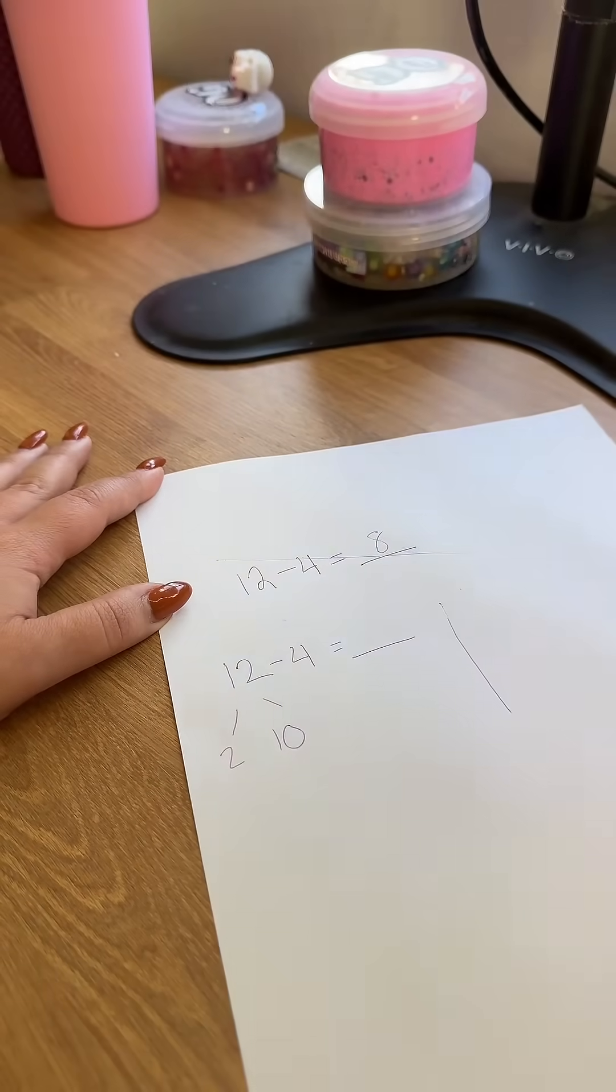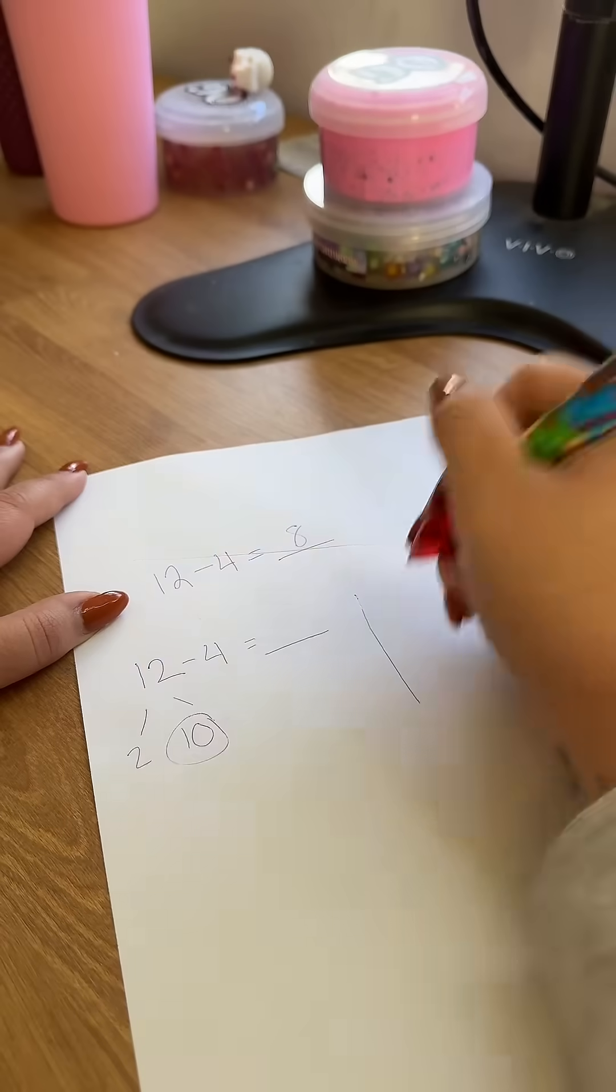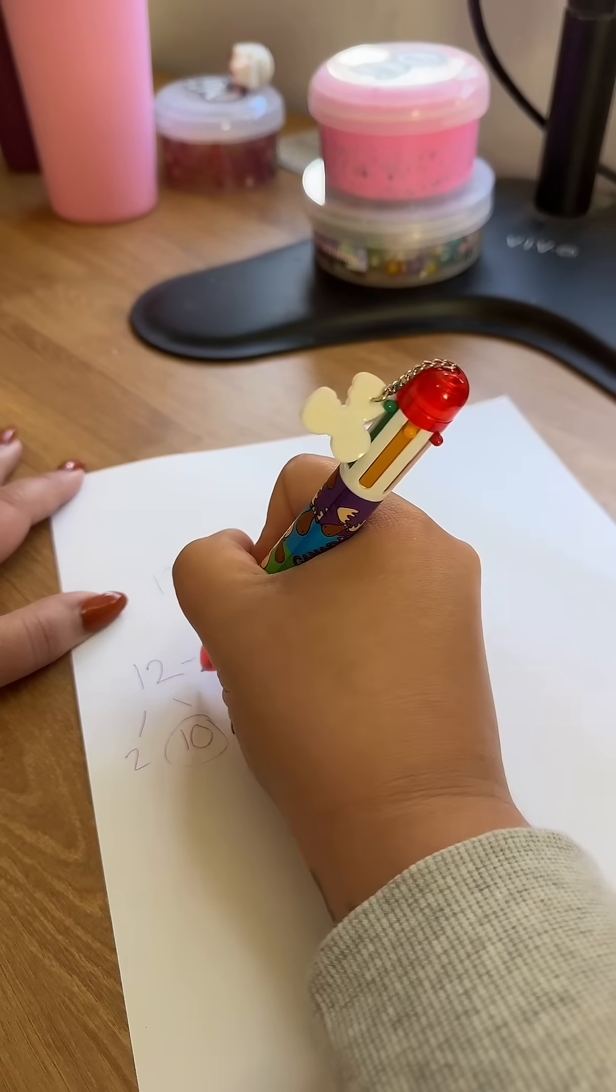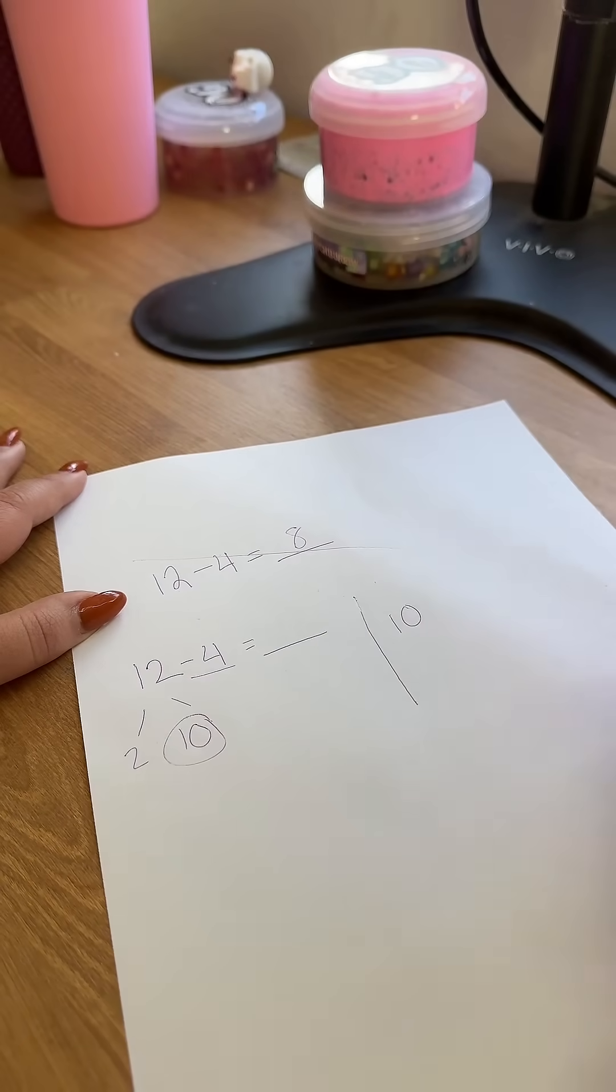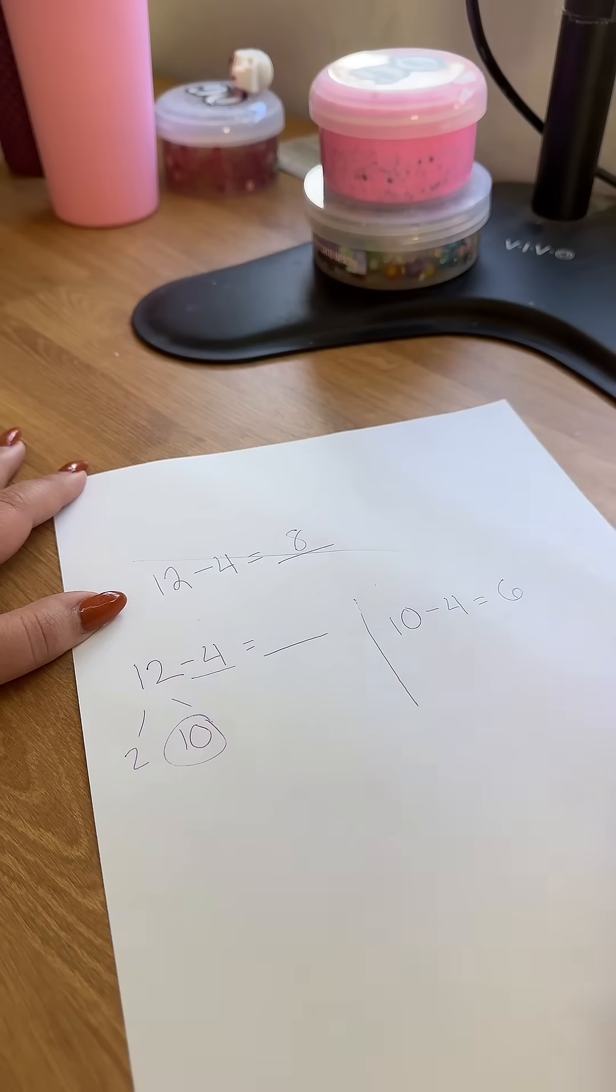Then they want them to create a completely separate math problem, taking the 10 and the remaining part of the original problem: 10 minus 4 equals 6.